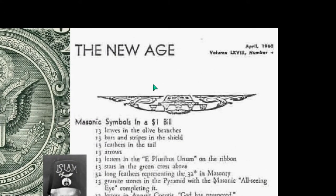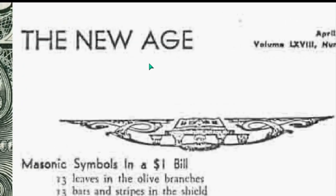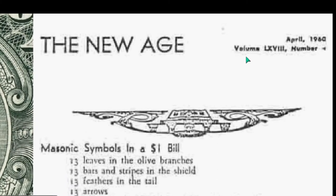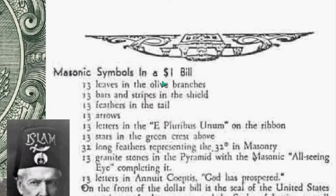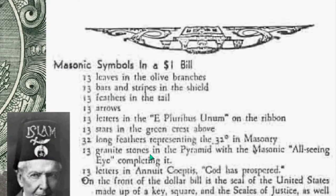This is the New Age magazine, which is the Freemasonic magazine — it's since been changed to the Scottish Rite magazine. The New Age movement is a direct result of Freemasonry through theosophy. Theosophy is Luciferian doctrine, so we can understand that the mystery religions and Luciferianism are the New Age movement. This is April 1960, and you can see the Masonic symbols on the dollar bill and the reference to 13s.